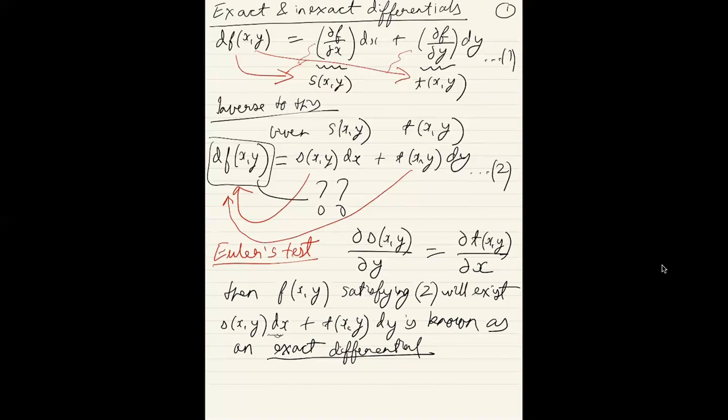Similarly, if partial s by partial y is not equal to partial t by partial x, then it is an inexact differential. These are extremely important for physical chemistry. In fact, something as basic as the first law of thermodynamics is really looking at properties of exact and inexact differentials, and we will look at some examples in a bit.